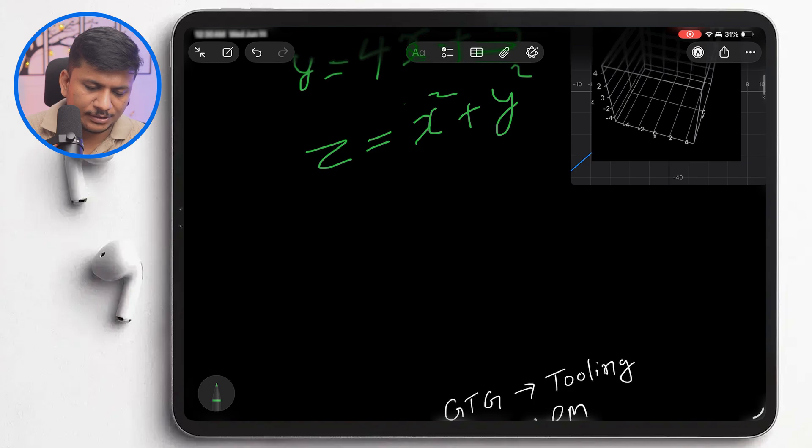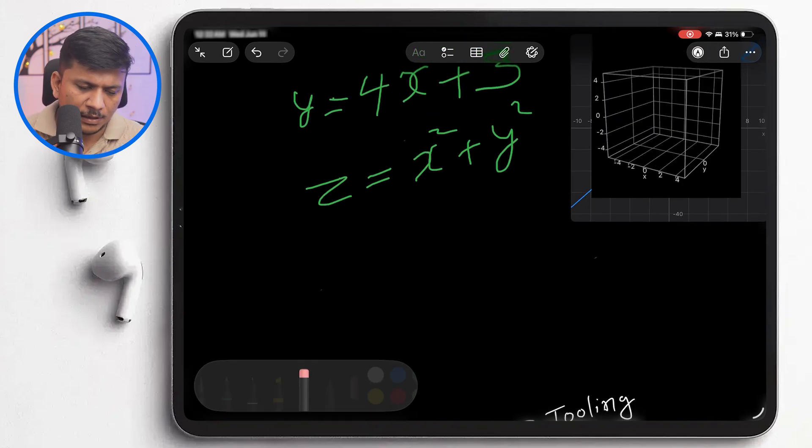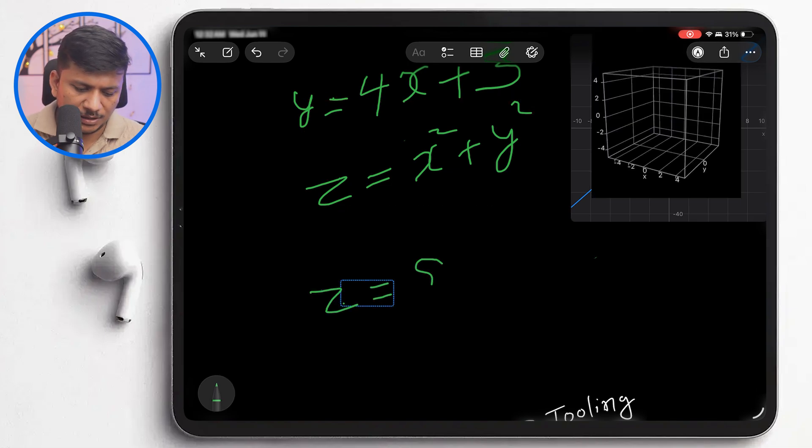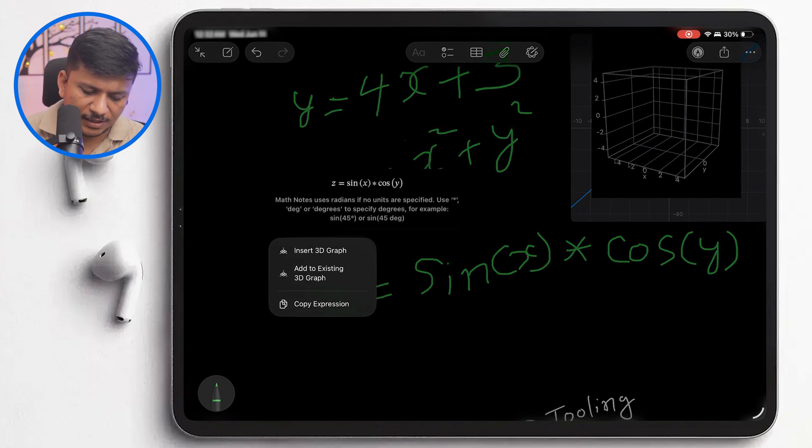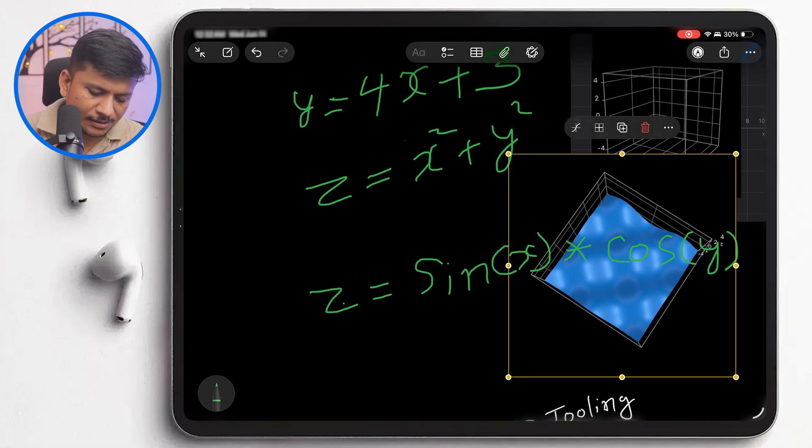Let me also write another equation. Similarly, z = sin(x) × cos(y). Here we can see this 3D graph. We have the option to either add it to an existing 3D graph or add a new 3D graph. This time I'll add a new 3D graph, and there we go.